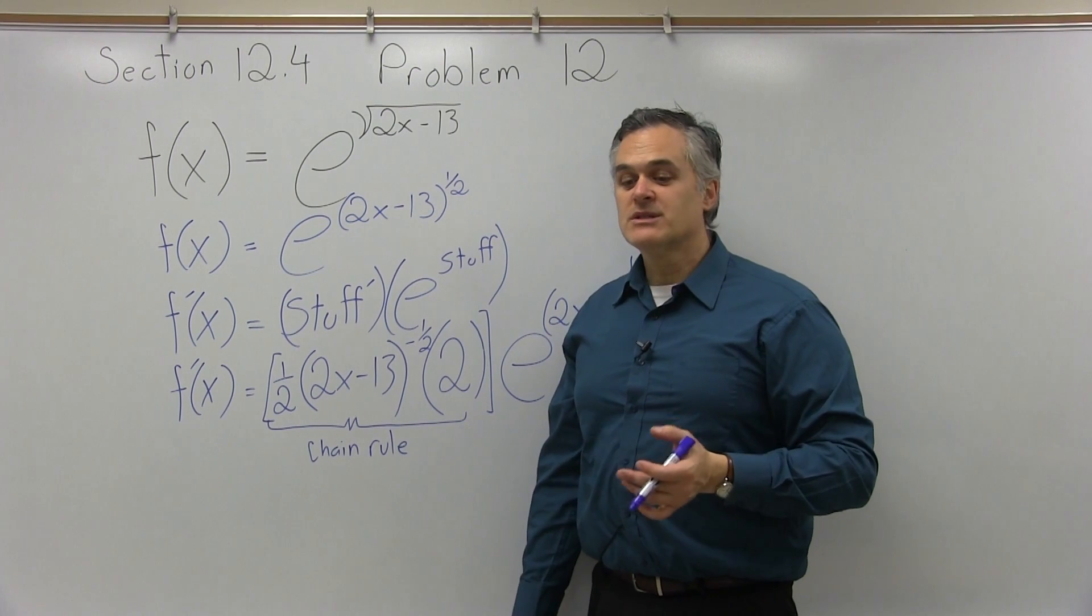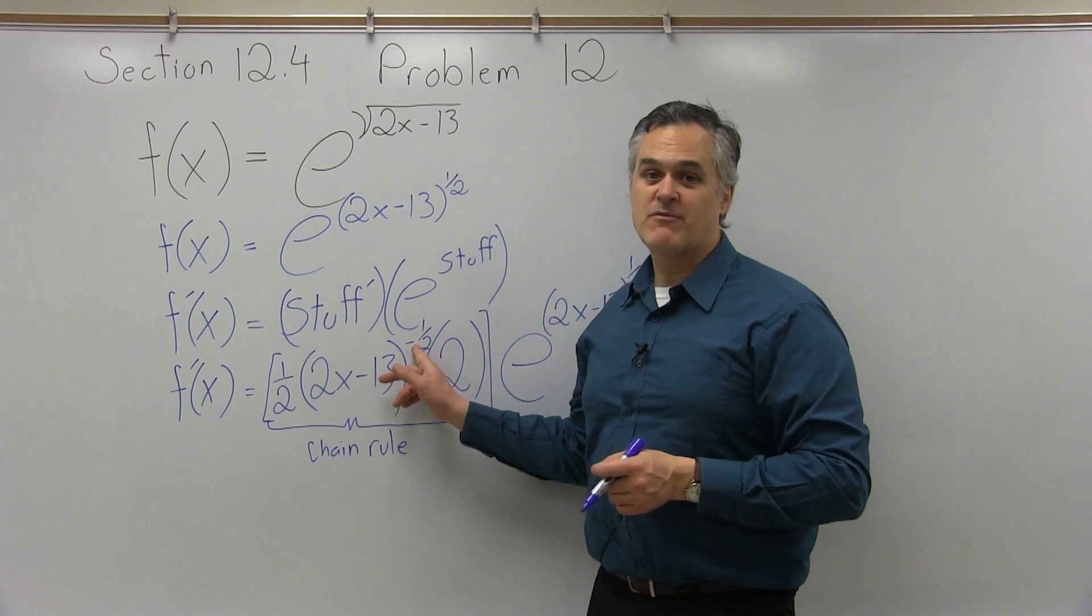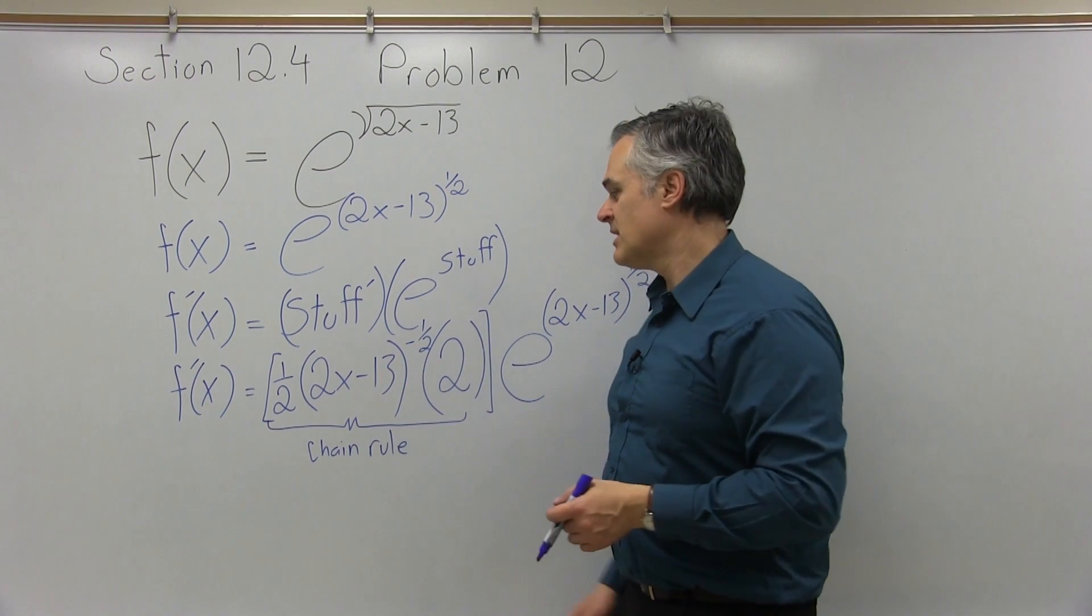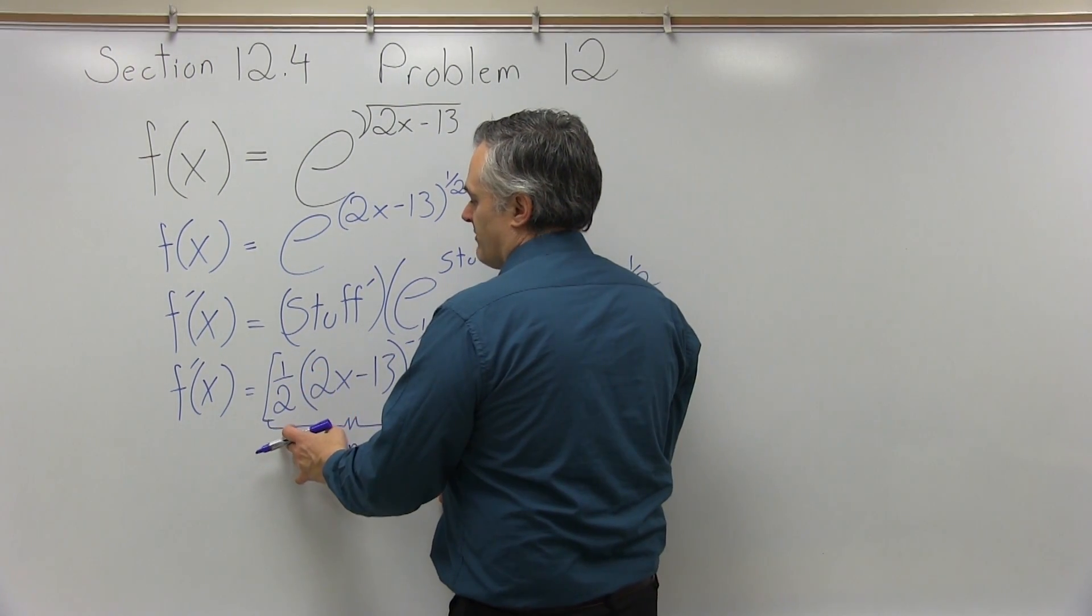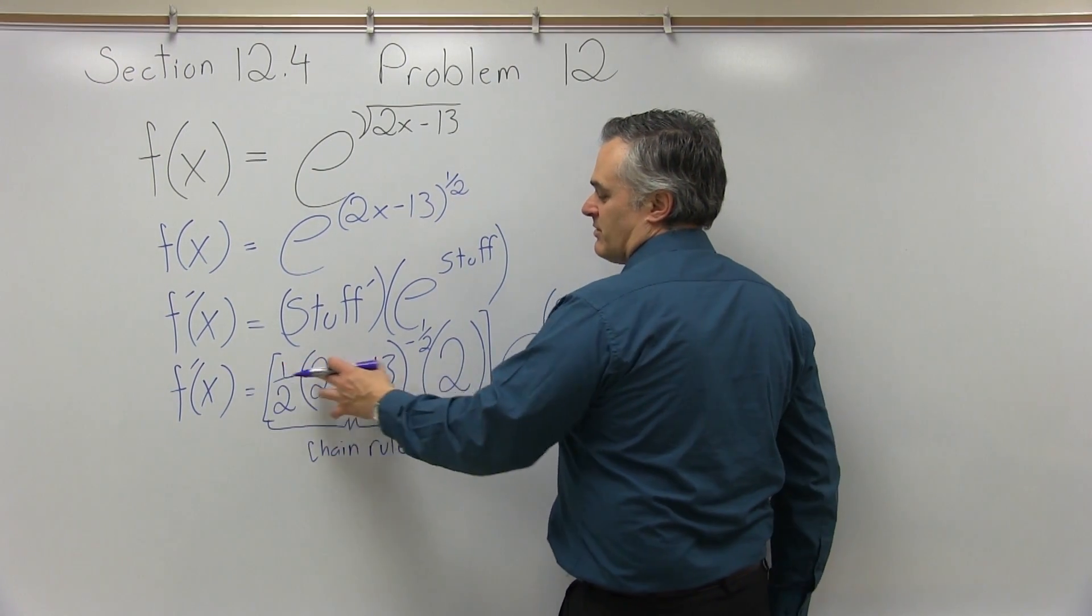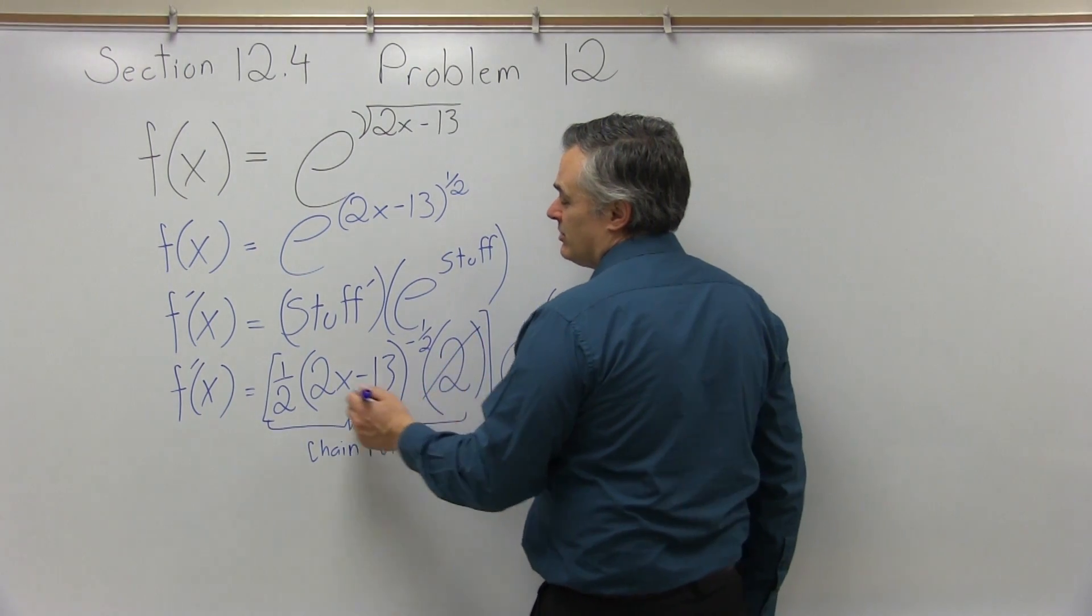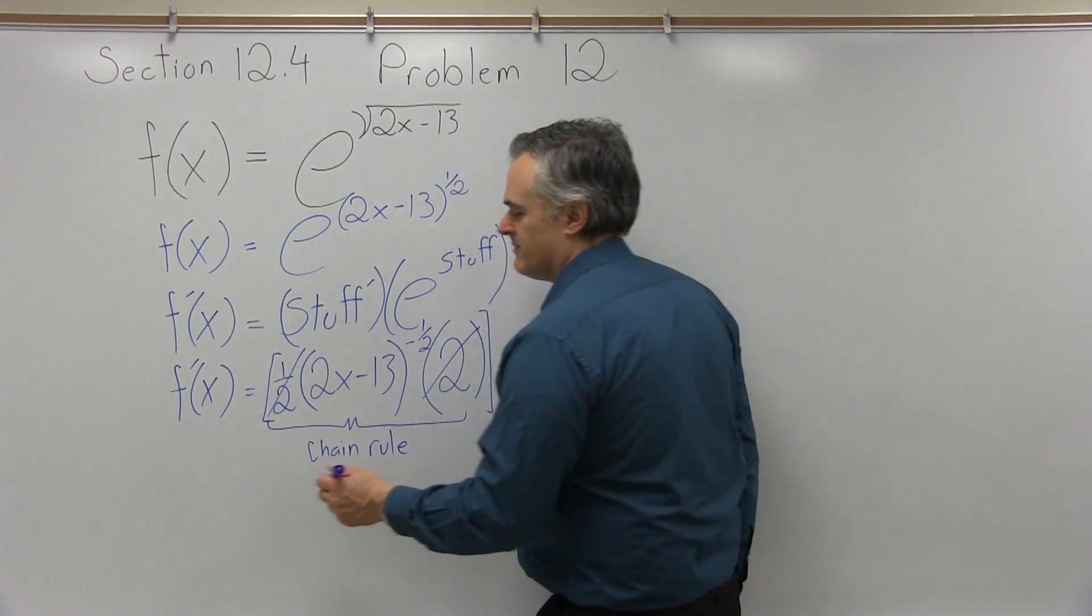And if you like, you can simplify somewhat. You can put the 1 half powers back to square roots. One thing that I will do in the chain rule portion of my answer for stuff prime, I have a 1 half and part of it, it's all being multiplied times a 2. Well, the 2 and the 1 half, I'd really like to cancel. Let's just cancel them.